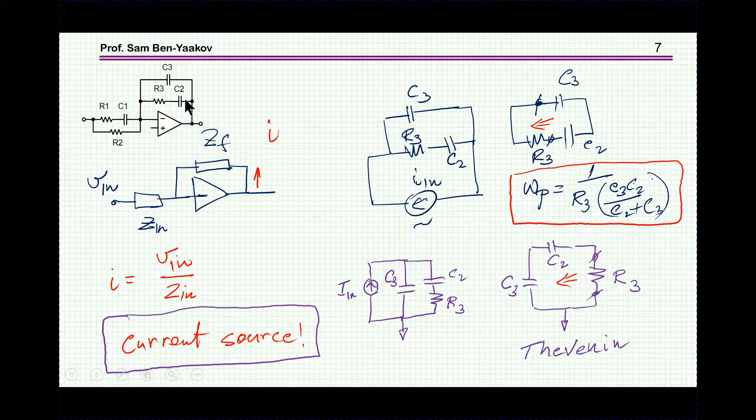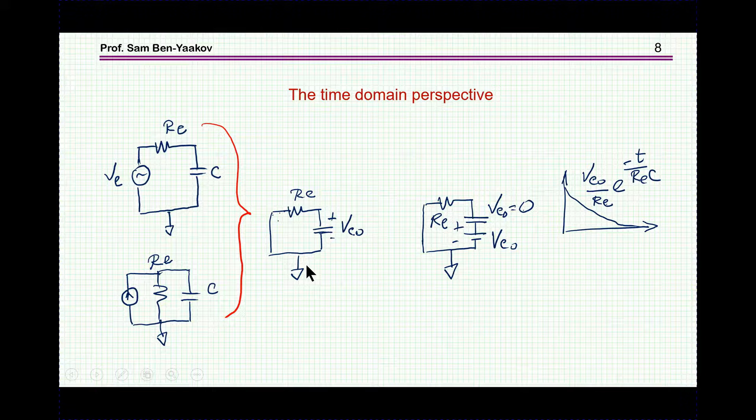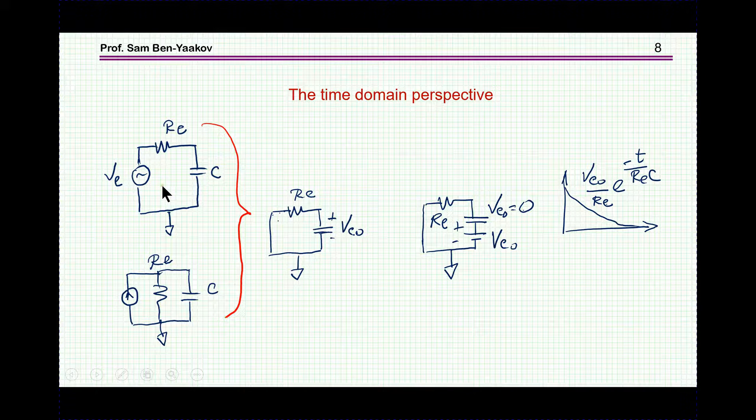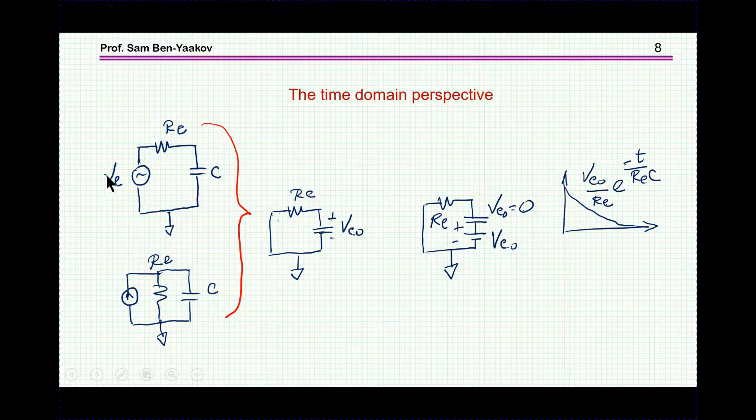Now, for those who are not convinced yet, let me show it in a different way. A different way to find a time constant will be sort of a mental experiment like this. Suppose you have an RC circuit, either voltage fed or current fed. Now, let's disconnect or short the voltage or disconnect the current, and then put some DC initial condition on the capacitor.